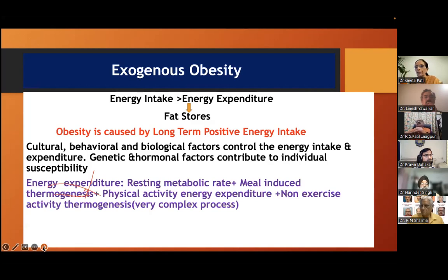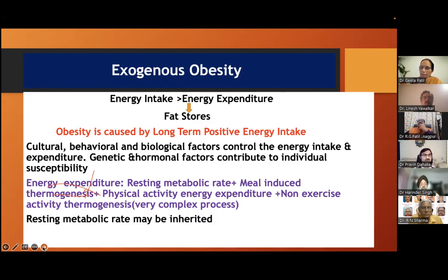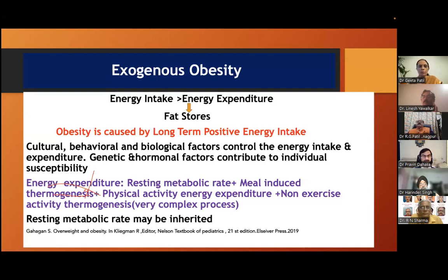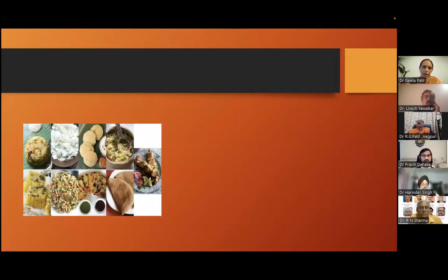Energy expenditure is very important. We always talk about energy expenditure through physical exercise. But is that the only energy expenditure? No. We have to remember resting metabolic rate, meal-induced thermogenesis, and physical activity energy expenditure. Very important is non-exercise activity thermogenesis — NEAT — which is a very complex process. Resting metabolic rate may be inherited or affected by some conditions. Meal-induced thermogenesis is different for different types of foods.